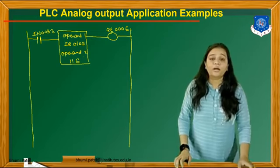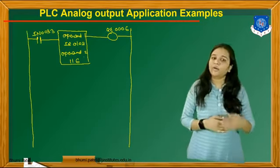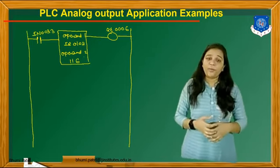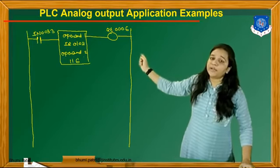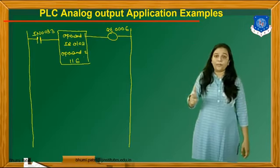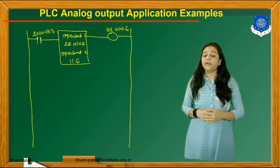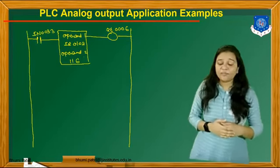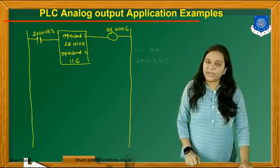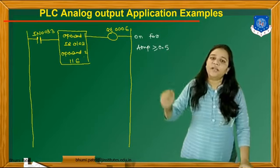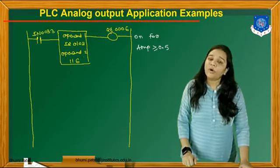When the ampere reaches 0.5A, we convert this current into a particular bit value using the earlier process — 0.5A converts to 116. We use the greater-than-or-equal-to function with input applied at IN0033 and two operands: operand 1 is input register IR0103 and operand 2 is 116. The value 116 is the converted bit value from 0.5 ampere, so the output is ON for ampere greater than or equal to 0.5.